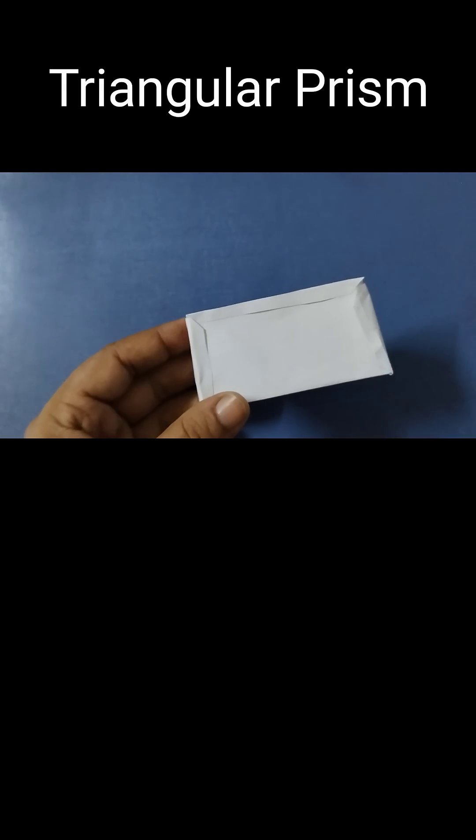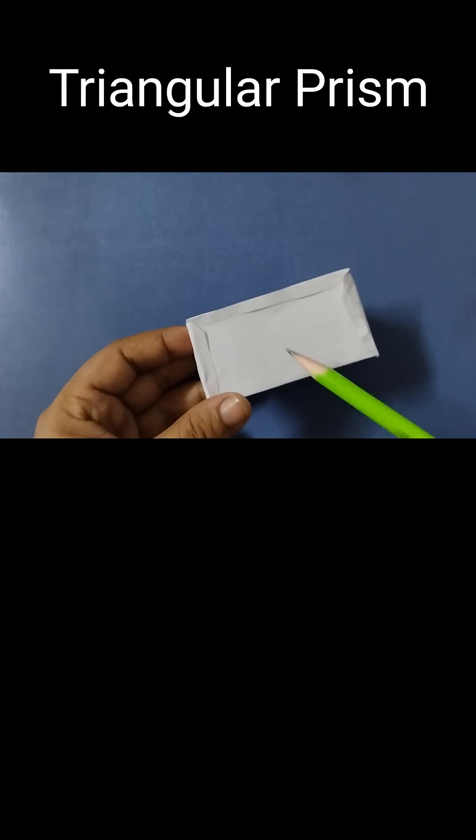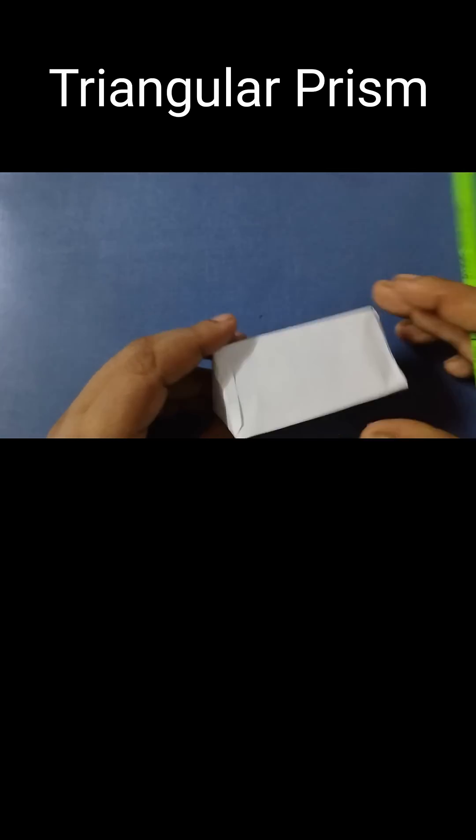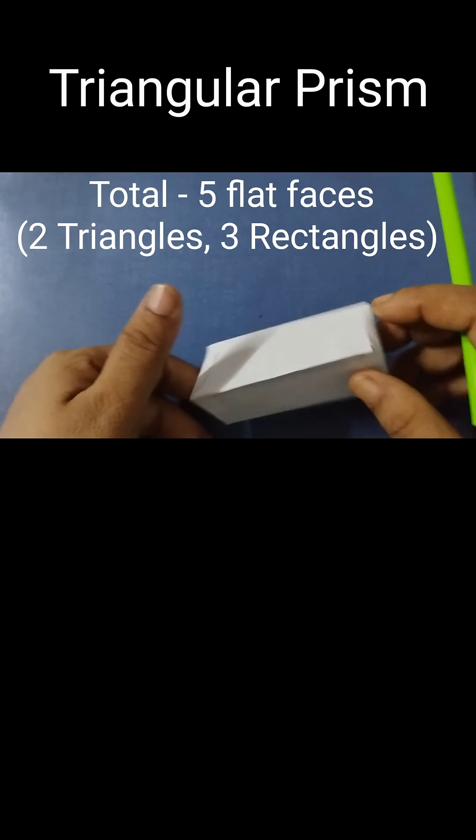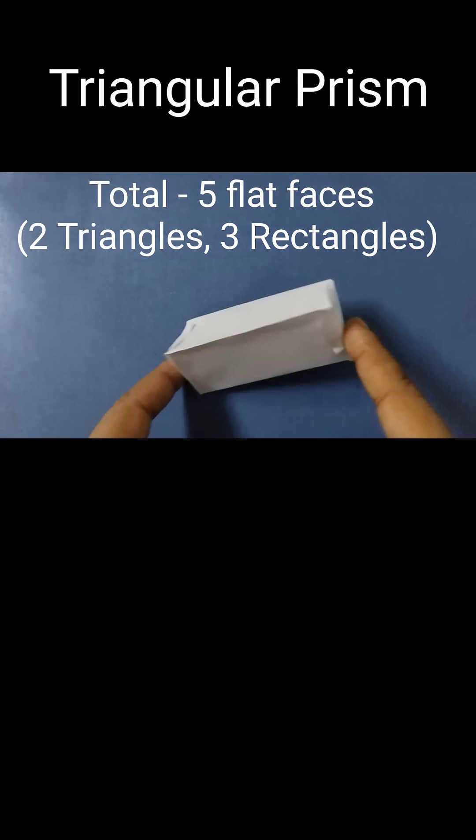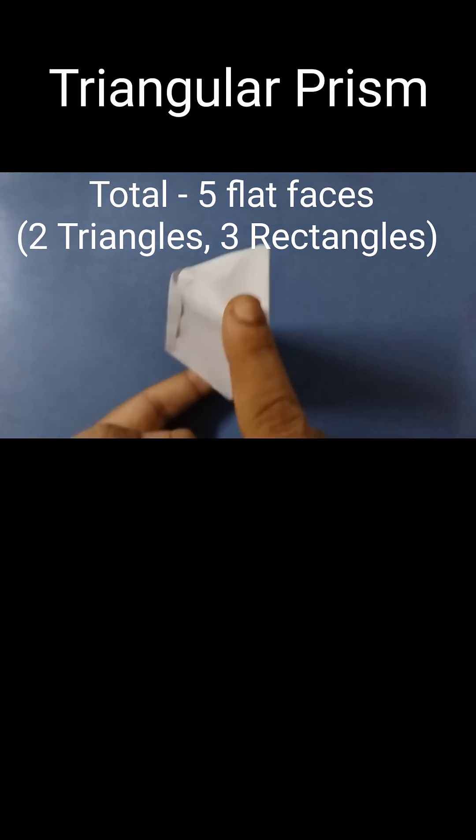Now if you look at the faces of this, this is a rectangle, this is a rectangle, and this is also a rectangle. So we have three rectangles, and then we have two bases which are triangles.